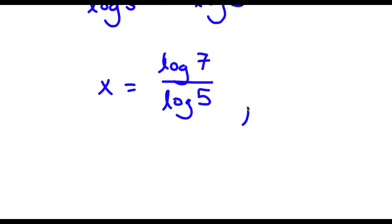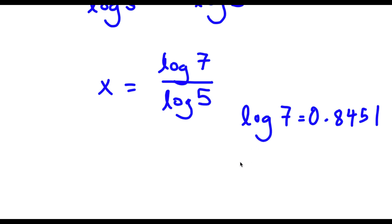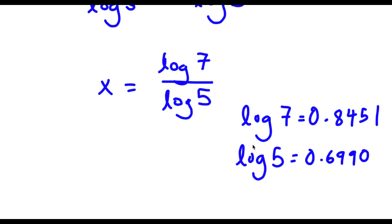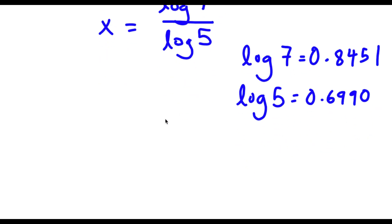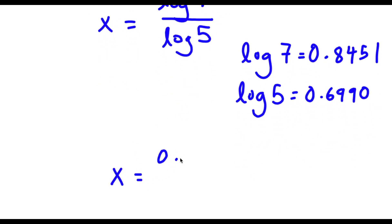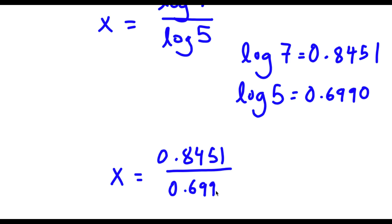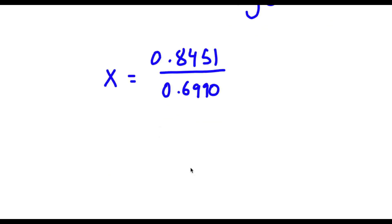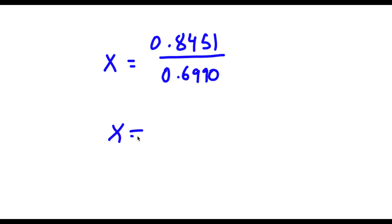Now log 7 is equal to 0.8451 and log 5 is equal to 0.6990. Substituting these values in, I get x is equal to 0.8451 over 0.6990. Dividing these two gives x is equal to 1.2090.